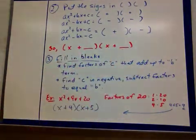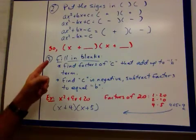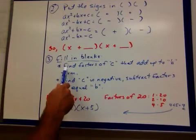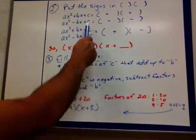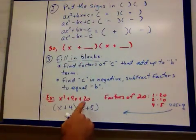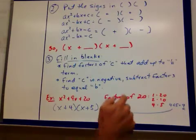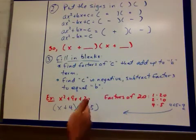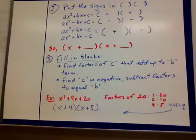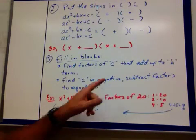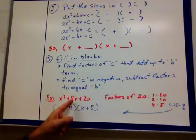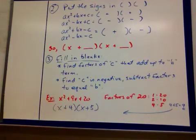So to fill in the blanks, what you're doing is this. You want to find the factors of your c term. Whatever that was. For us, it was 20. And you want to take factors of that. So what times what gives me, in this case, 20. But because it's a plus 20, I want to be able to add them up and equal my b term, the 9 in this case.